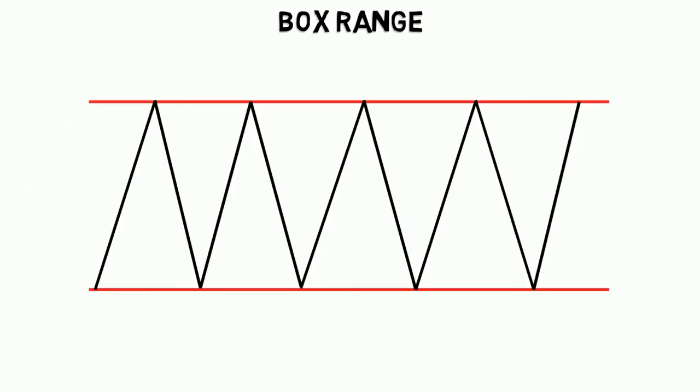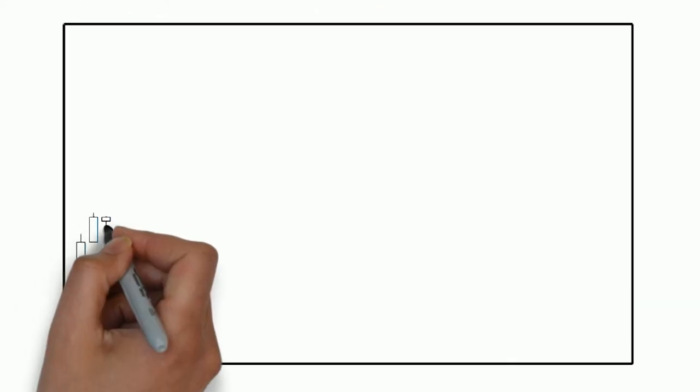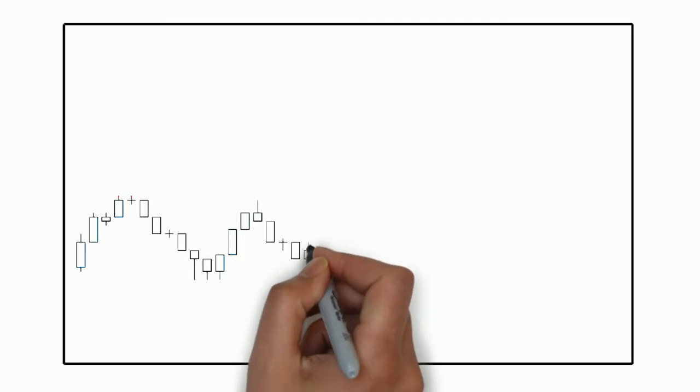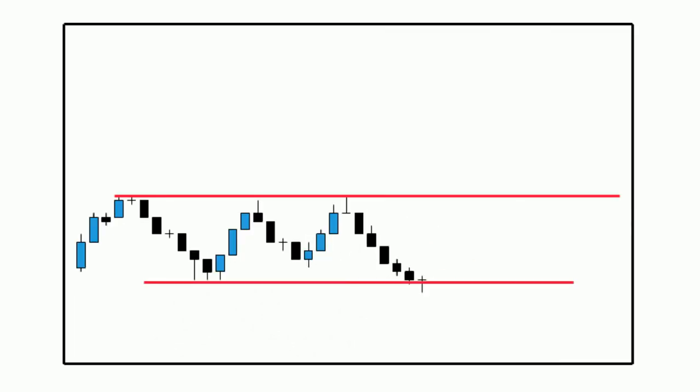A box range is a neutral chart pattern. It forms when there is a prolonged period of indecision in the market and is defined by strong parallel support and resistance lines. As you can see, the price has been bouncing from support to resistance several times and is unable to break out in either direction.